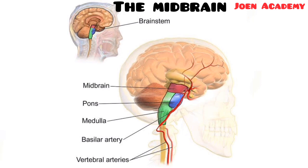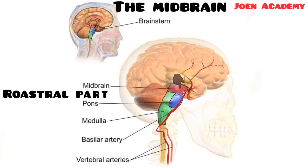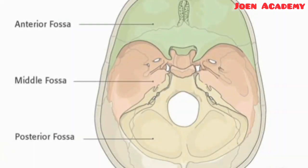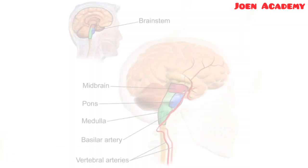It will interest you to know that the midbrain is also known as the mesencephalon. Among the structures of the brain stem, the midbrain is the part that is at the topmost — this simply means that it is the rostral part of the brain stem. It plays an important role in linking the pons and the cerebellum to the forebrain. Almost all parts of the midbrain are situated in the posterior cranial fossa, and it passes across the hiatus of the tentorium cerebelli in a horizontal manner.